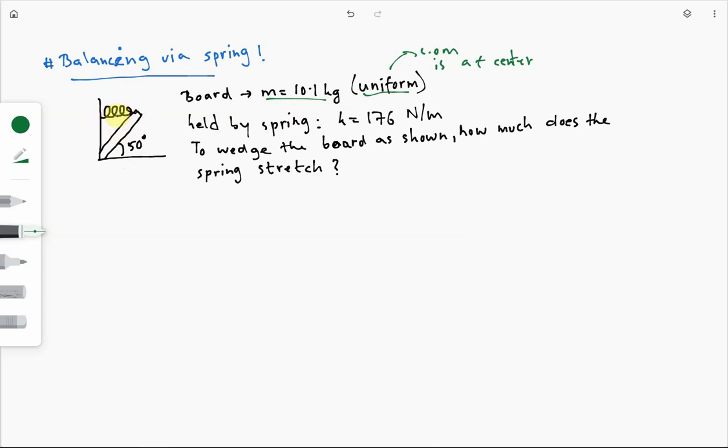You can think of this as sort of stable equilibrium, right? If you can exert enough force to break this spring, then you can cause it to disturb from equilibrium. You can cause it to rotate or something like that. Now, the spring has a spring constant, k, of 176 newton over meters, and we want to know how much does the spring stretch to keep this board in place, as shown.